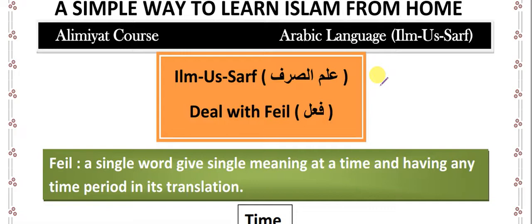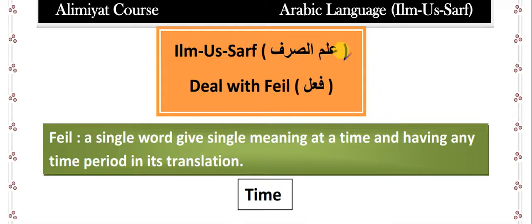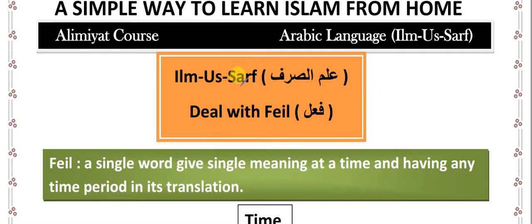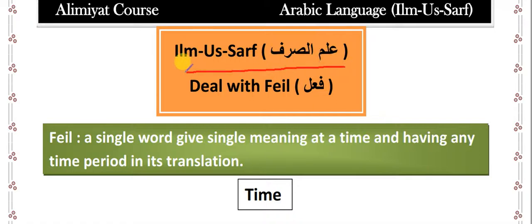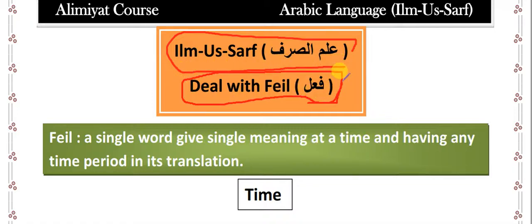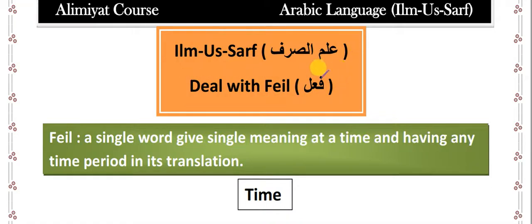These are the general and basic terms which are very related to fi'l. Understanding fi'l totally depends on all the terms we are going to discuss in this video, so it's very important to understand and memorize these terms. That's why I sent you the notes one day before the video. I hope you already learned the notes, and now I'm going to explain all the terms in detail with examples. So: Ilm al-Sarf is a subject where we learn about fi'l. Arabic language is made up of three words: ism, fi'l, and harf.